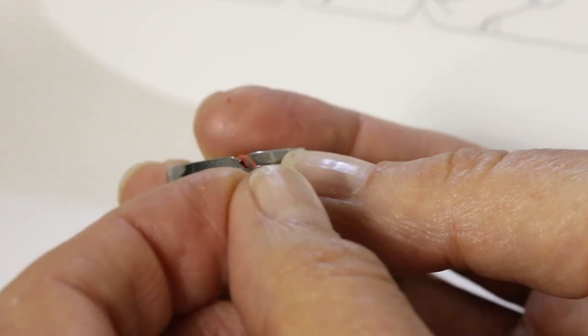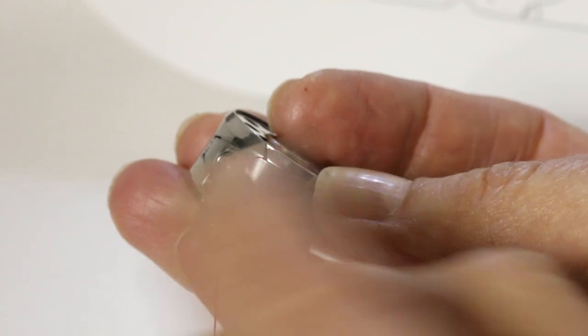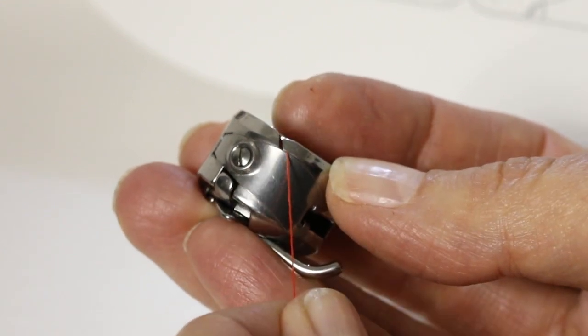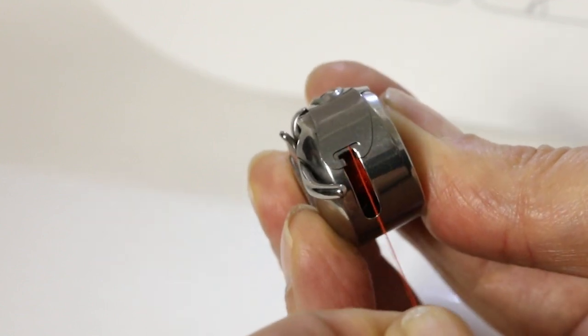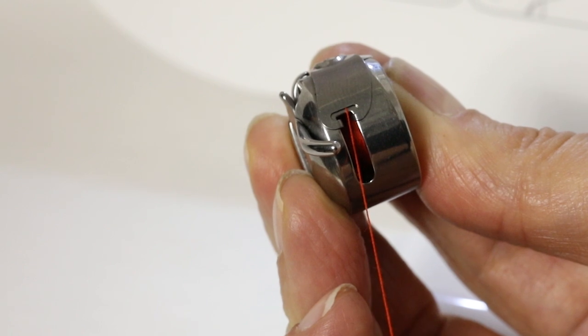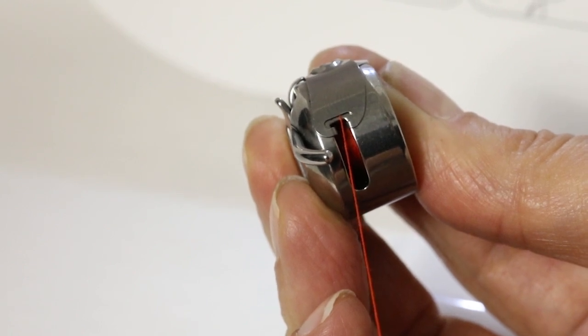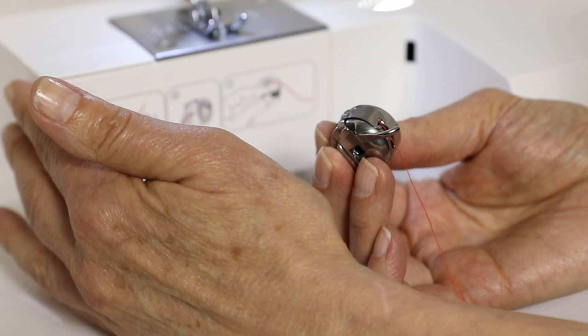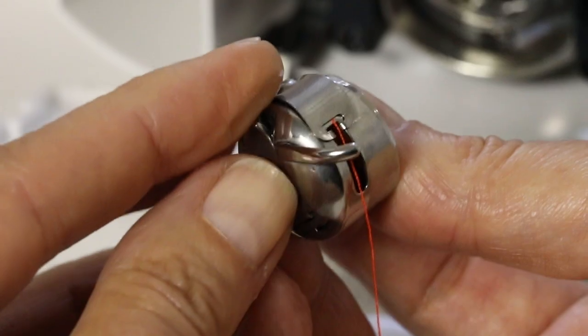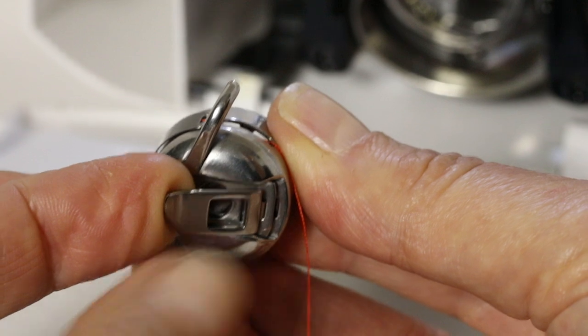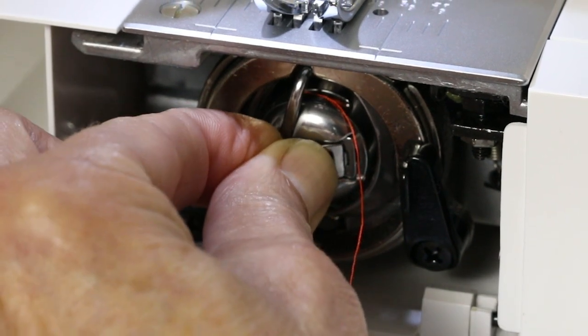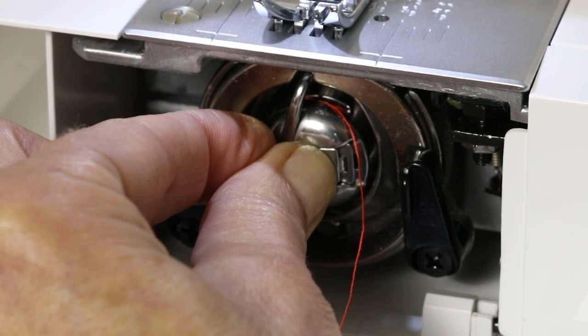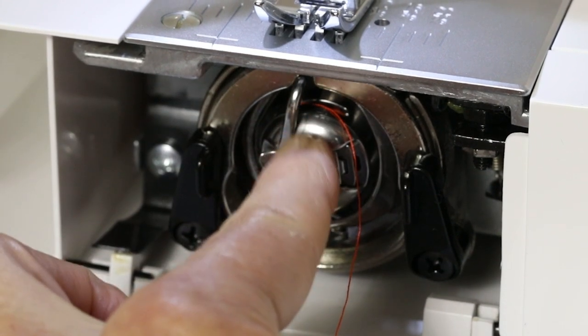Bring this thread into this little slit here at the side of the bobbin case and then bring it around this metal tab and pull it until you feel it and hear it click into place. Next open the door and hold your bobbin case by this little latch. Place it in your bobbin holder until you feel it seat into position with this metal finger pointing straight up.